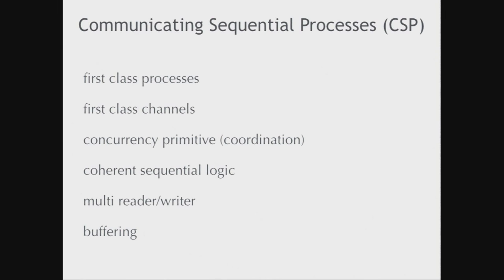It turns out that lying on the shelf for decades, there has been a technology that really elegantly solves these problems, and it's called Communicating Sequential Processes. What CSPs provide are an abstraction for processes — a thing that represents an independent flow of control — and an abstraction for conveyance. You could say queues, but the actual term in the literature is channels. Those things together form a new kind of concurrency primitive — a coordination primitive that says, if I'm going to put something on a channel, then I am going to block or pause or stall until someone else can take it off.